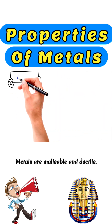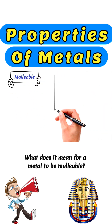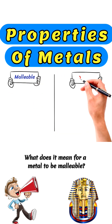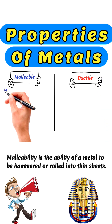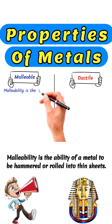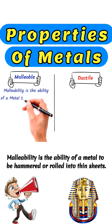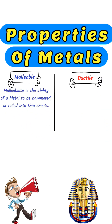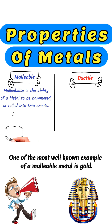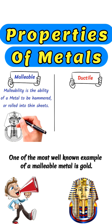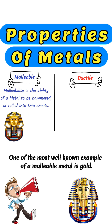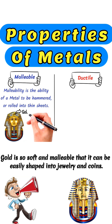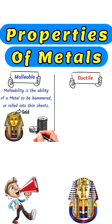Metals are malleable and ductile. What does it mean for a metal to be malleable? Malleability is the ability of a metal to be hammered or rolled into thin sheets. One of the most well-known examples of a malleable metal is gold. Gold is so soft and malleable that it can be easily shaped into jewelry and coins.